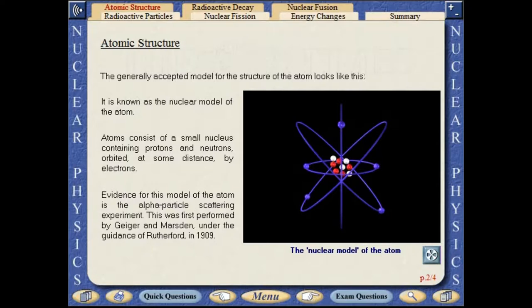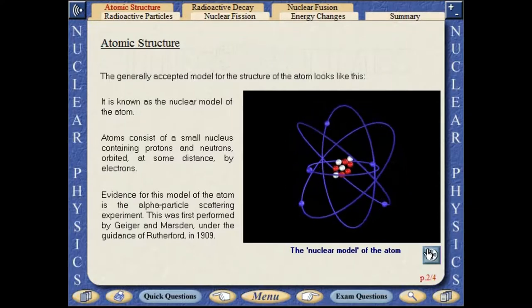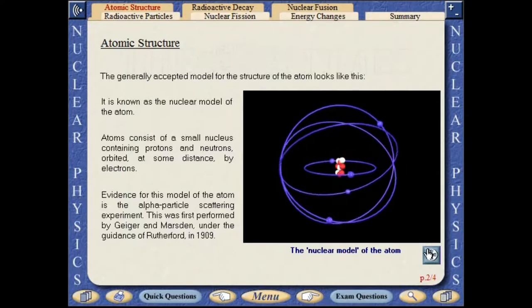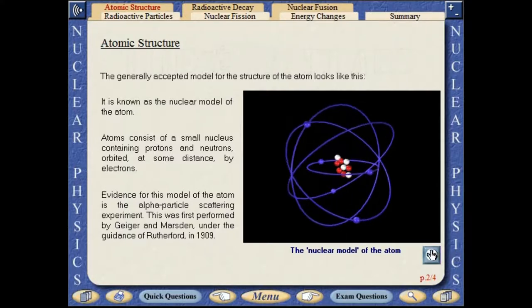The generally accepted model for the structure of the atom is known as the nuclear model of the atom. Atoms consist of a small nucleus containing protons and neutrons, orbited at some distance by electrons.